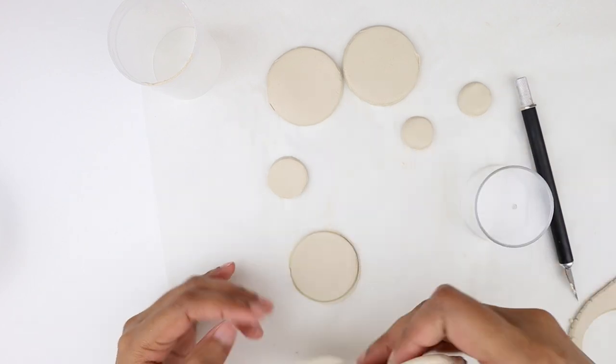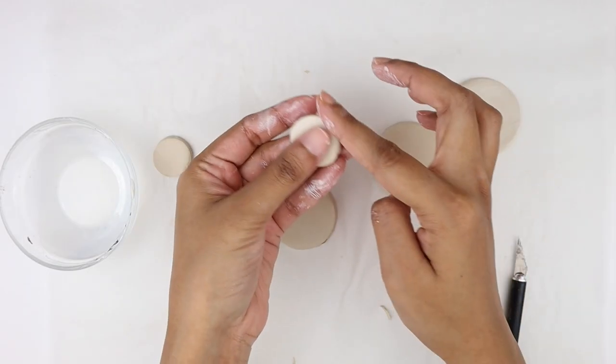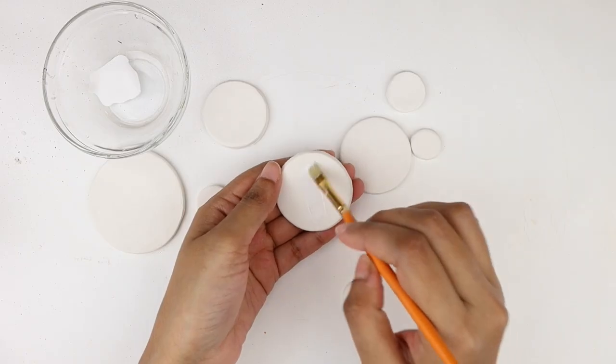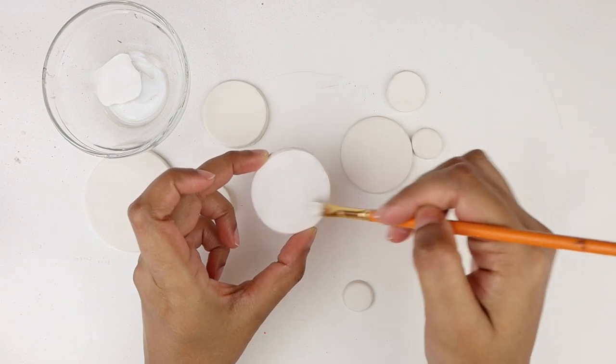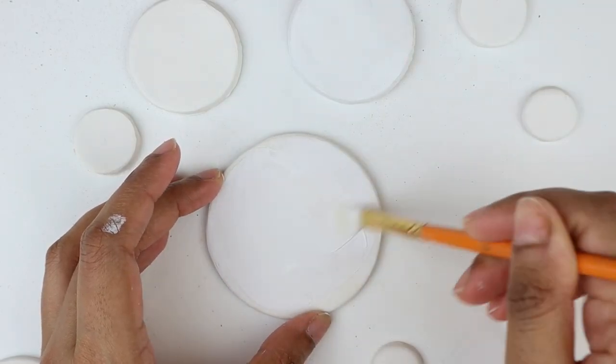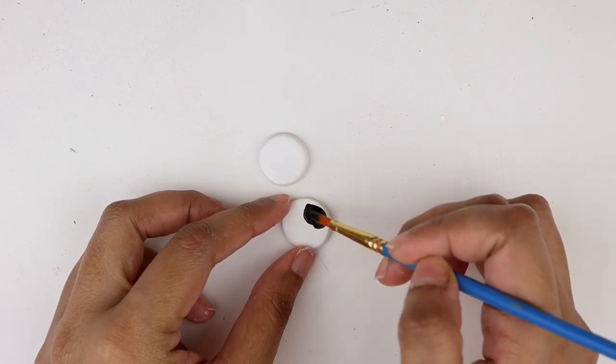This way I'm cutting all the circles, and once that is done I'm going to smooth out the edges. Then I'll let the pieces dry for 24 to 48 hours. After they're dry, I'm first going to paint them with a white acrylic paint, and I'm also going to apply two coats of it. Now I'm starting with the two smallest pieces and painting them black.